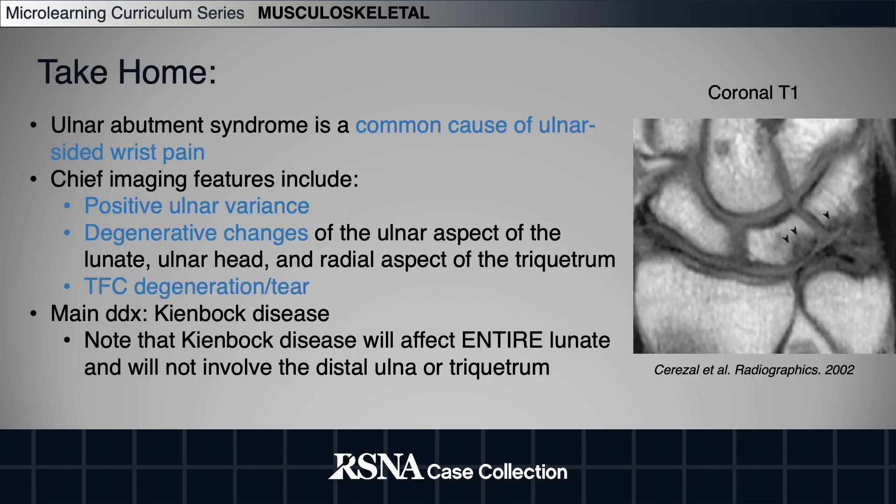In summary, ulnar abutment syndrome is a common cause of ulnar-sided wrist pain. The typical imaging features include positive ulnar variance, degenerative changes of the ulnar aspect of the lunate, plus or minus the ulnar head and radial aspect of the triquetrum. And remember that with Kienbock disease, the lunate is diffusely affected, and the triquetrum and ulnar head are spared.